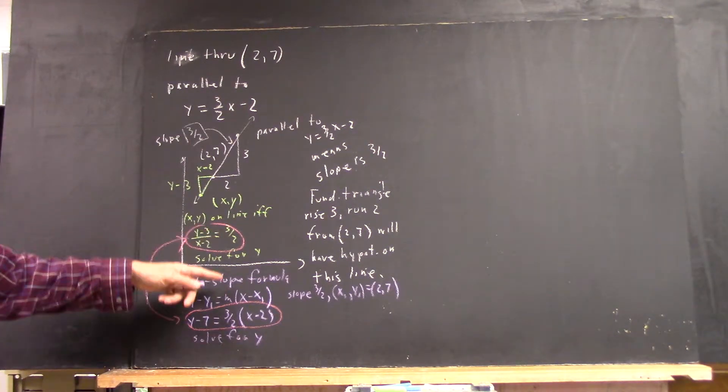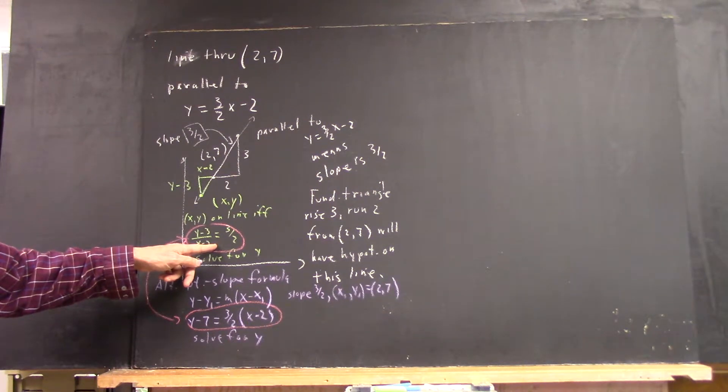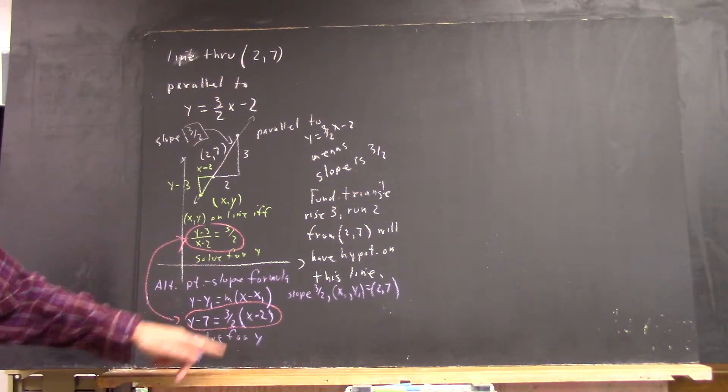What's the difference between this and this? Well, from here you multiply both sides by x minus 2, and this is what you get, right?